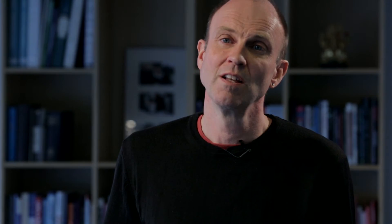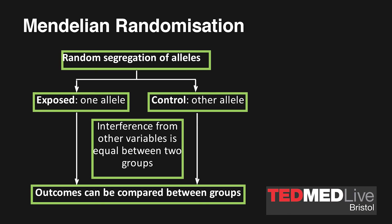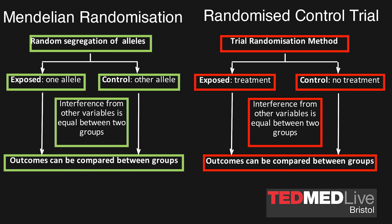Here's Mendelian randomization shown in a graph, similar to the one used for demonstrating the randomized controlled trial, and we can put the two together to show the equivalence of these two methods.